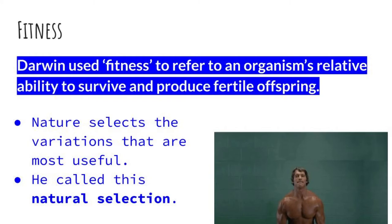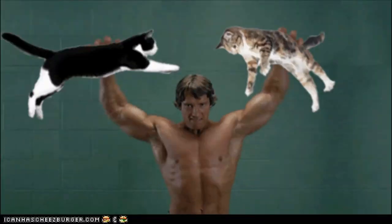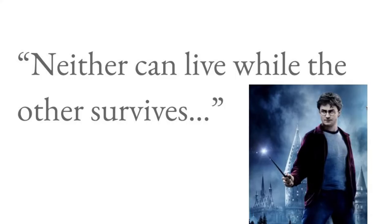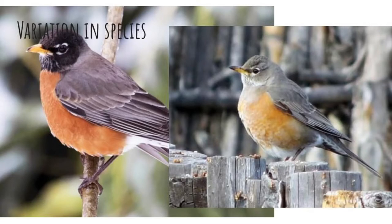Nature selects the variations that are most useful — he called it natural selection. Meaning some species have certain variations that are not good fits. You don't see any palm trees up in New Hampshire, because they are adapted to living down south where it is almost always warm. One variation is much better suited than the other — one of them will die, and the other will survive. And I thought this quote was rather fitting, from the Harry Potter series: 'Neither can live while the other survives.' Which is also the case in the robin world.